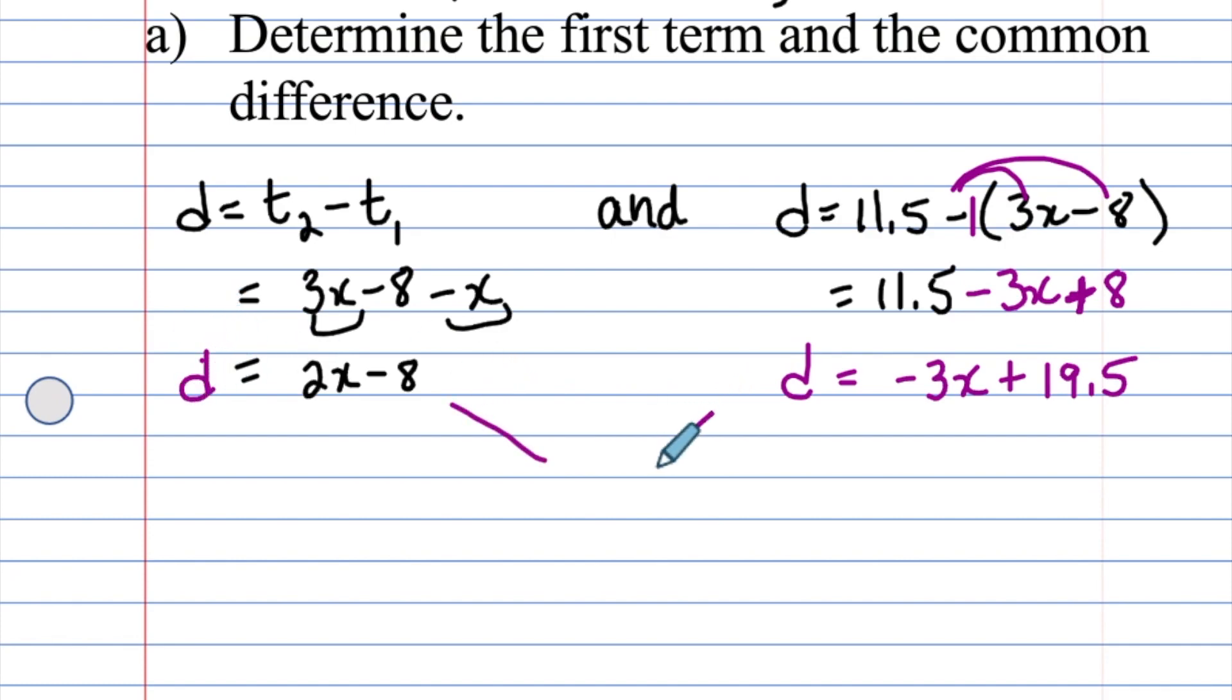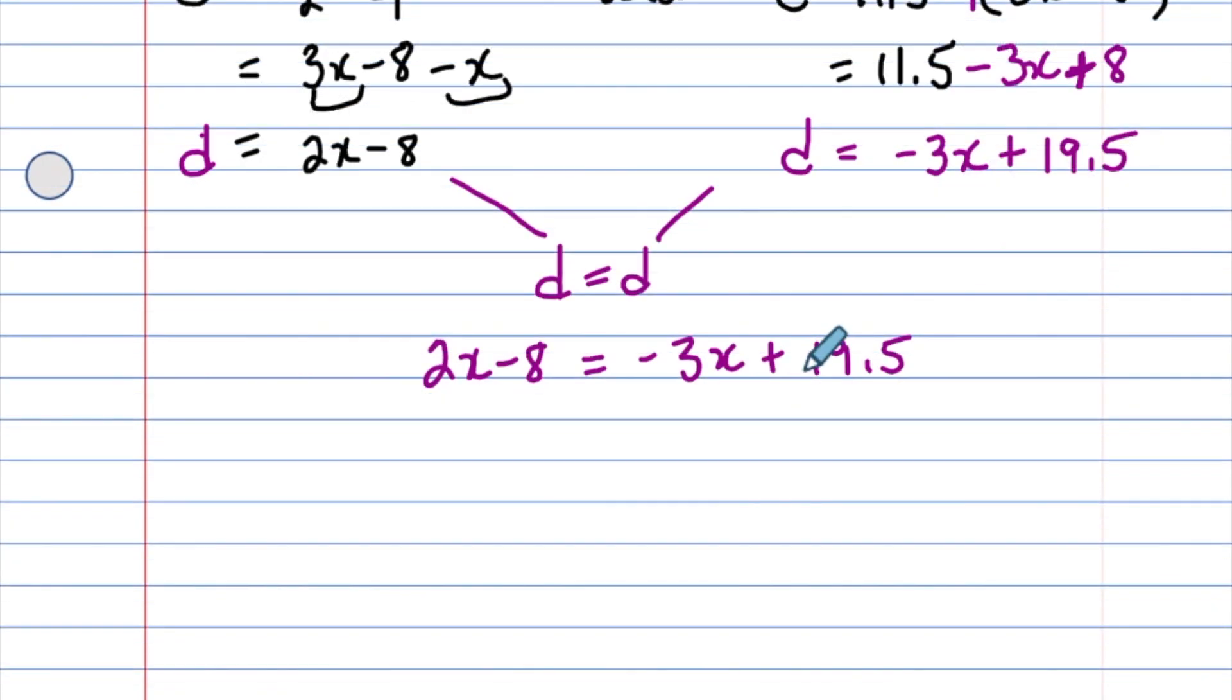Now these two d's come together. d is the same as d. We can say that 2x minus 8 is the same as negative 3x plus 19.5. Now we have to remember how to solve an equation. Our job is to get all of the x's on one side of the equation. And there's our equal sign. What I want to do is make this a zero pair. If I add 3x to the right side, I need to add 3x to the left side because I have an equation. Whatever we want to add to one side of the equation, we must do to the other. And when we do that, this becomes a 0x or zero. It's a zero pair.